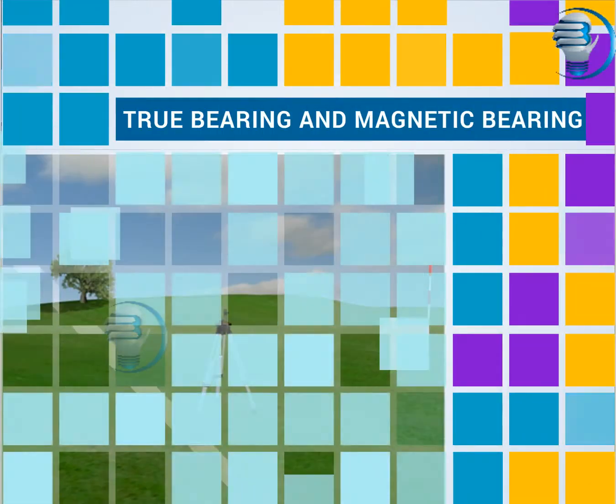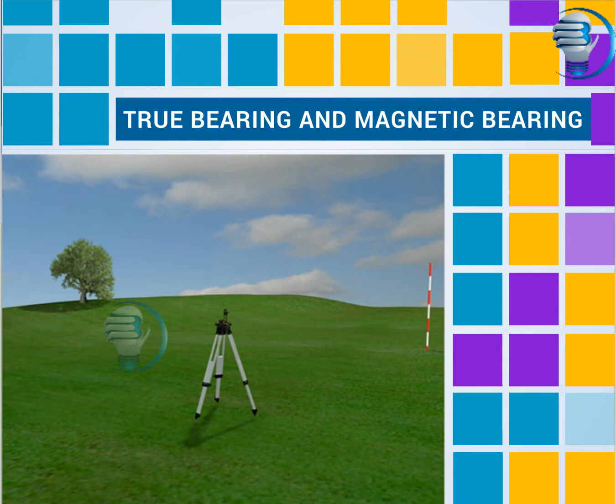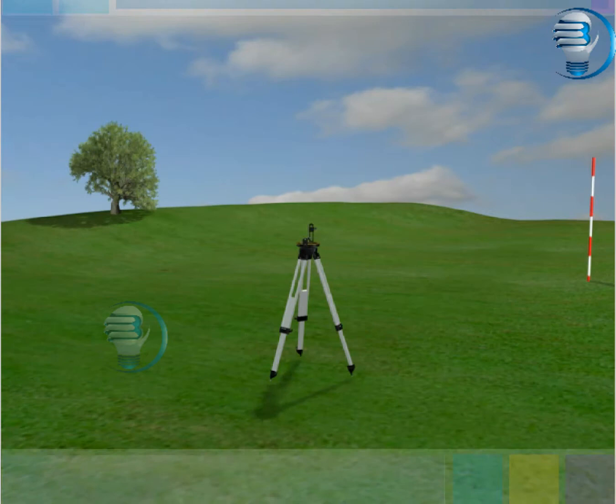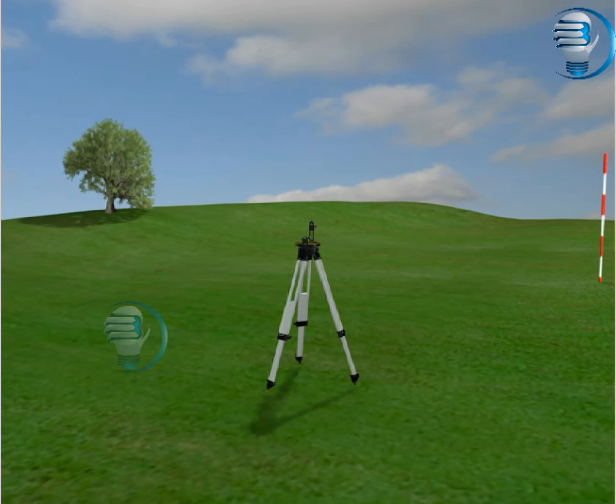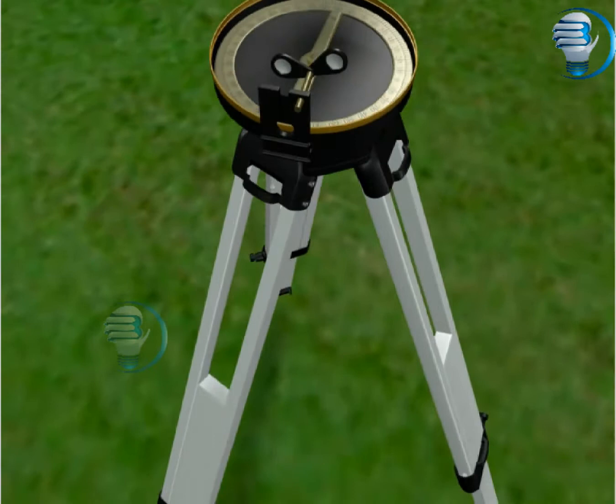True Bearing and Magnetic Bearing. A and B are the points whose bearings are calculated. The magnetic compass may deflect, pointing toward magnetic north.